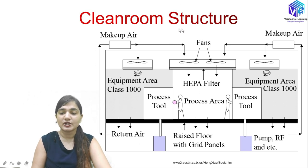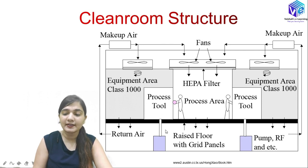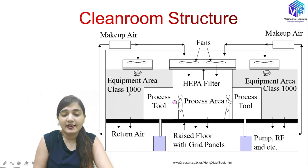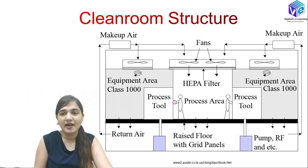Now, looking at the clean room structure: the makeup air goes inside, and we have highly purified filtered air in the processing area where the processing tools are used. Return air is routed back to the outside via pumps and exhaust. The equipment area can require a class such as Class 1000, and various instruments control the particle size, particle width, and particle count in this area.